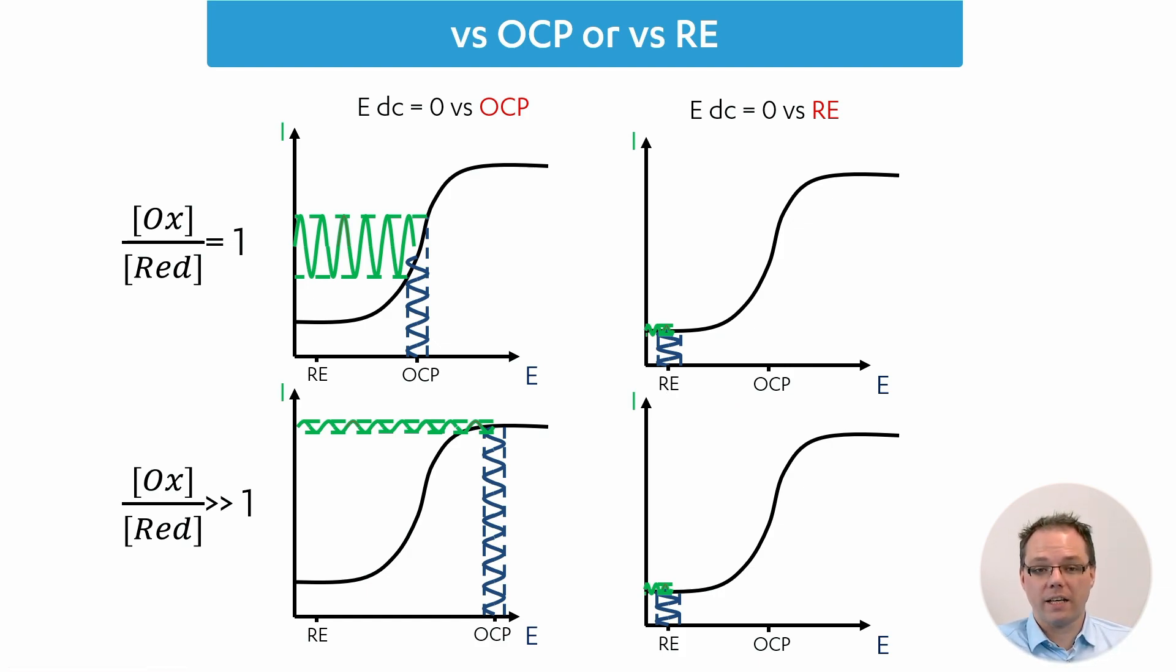Plus we have pulled away the working electrode from its OCP to the RE's potential, so we also have in the background a reaction running now. If your solution has a very different ratio, measuring versus OCP would put you at a different place where you might get a bad signal. If you apply zero volts versus a reference electrode and you have a proper reference electrode, the potential will not be influenced by the concentrations in solution. This is a rather common mistake that people apply zero volts versus their reference electrode, pulling the working electrode from its OCP to the reference electrode's potential.